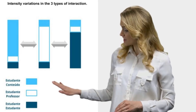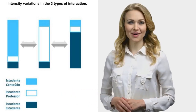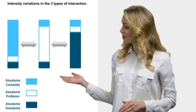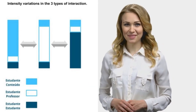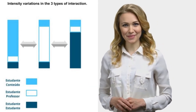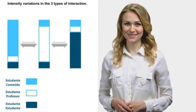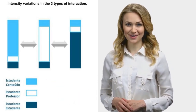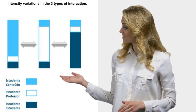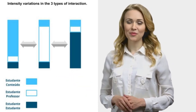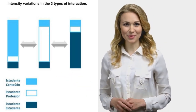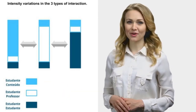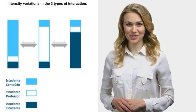Here on the left of this figure, we can see an example of a course that invests mainly in student-content interaction and less in the other forms of interaction. In the middle of the figure, we can see an example of a course that invests mainly in student-teacher interaction. And on the right side of the figure, we can see an example of a course that invests more in student-student interaction and less on student-content or student-teacher interaction.